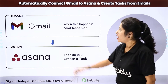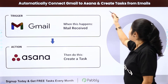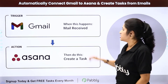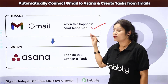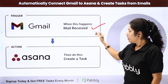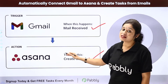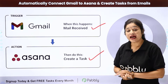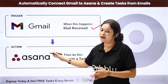In this video we are going to learn how you can automatically connect Gmail to Asana and create tasks from emails. The idea is that whenever you receive a new mail into your Gmail account, based on specific keywords, the mails should be sorted and then using the details of the mail, automatically a new task should get created into your Asana account and assigned to a specific team member.